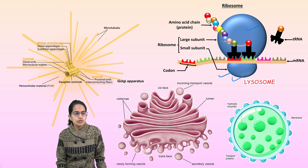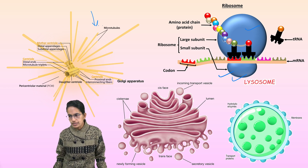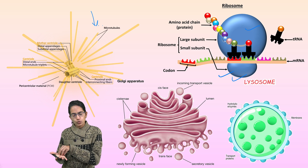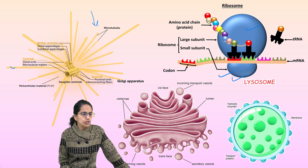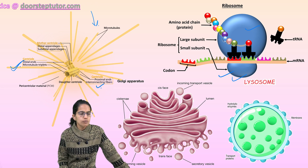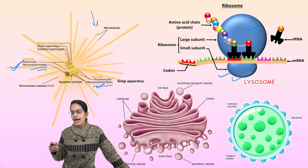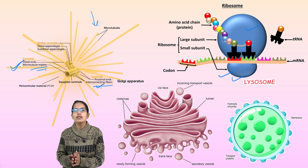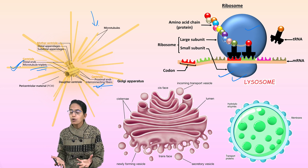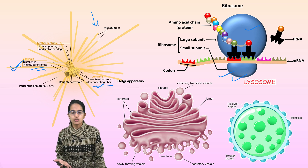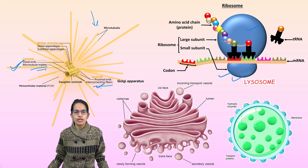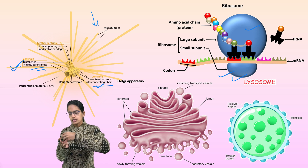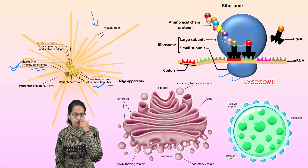The next is centrosomes. Centrosomes are seen exclusively in animal cells. They are near the nucleus in the cytoplasm. They are pillar-shaped structures attached together, with distal ends and proximal ends. Proximal ends have interconnecting fibers; the distal ends have microtubule triplets. Centrosomes are responsible for spindle formation during cell division. The basal bodies of cilia as well as flagella develop from the centrioles. During cell division, the centrioles migrate to opposite poles in the process of meiosis and mitosis.